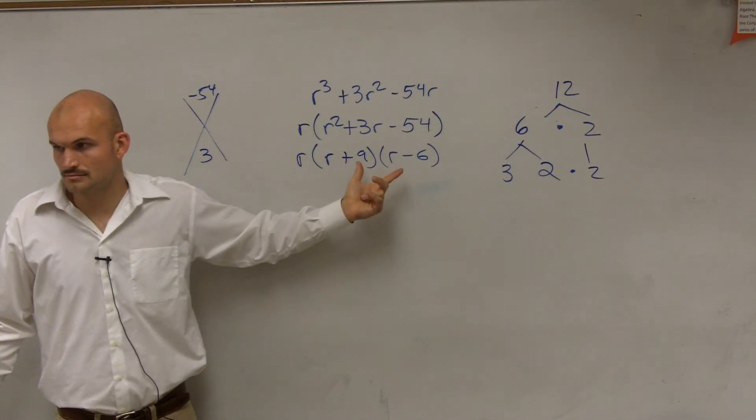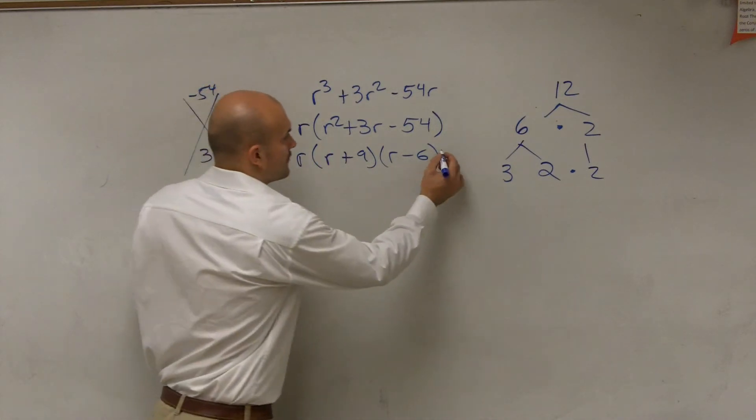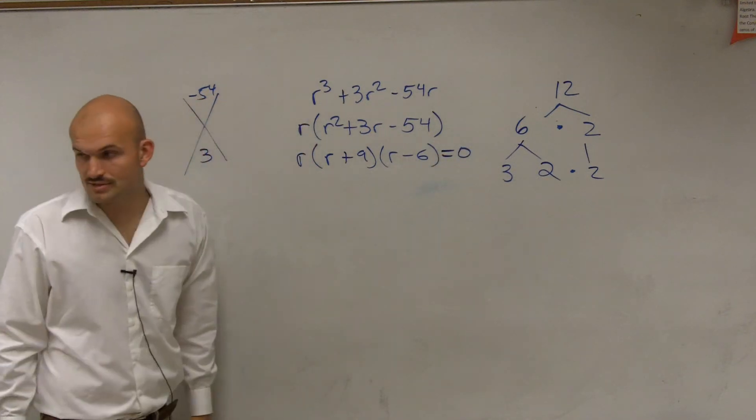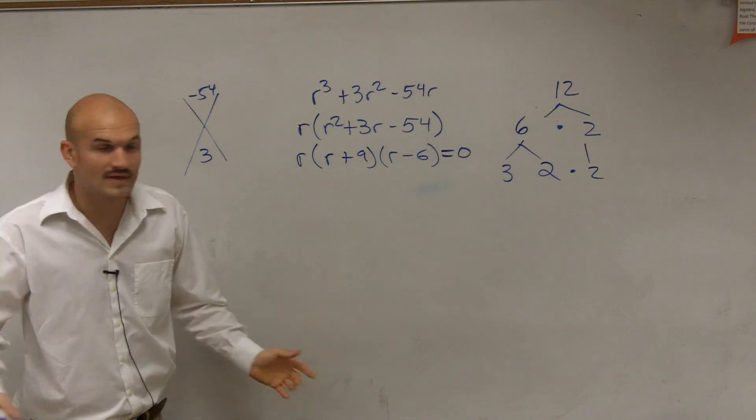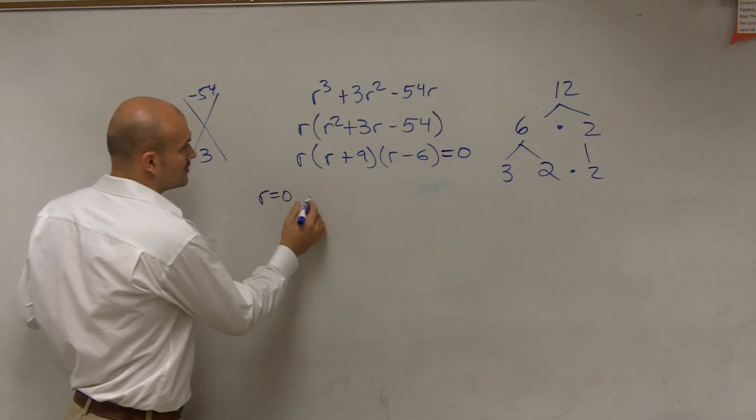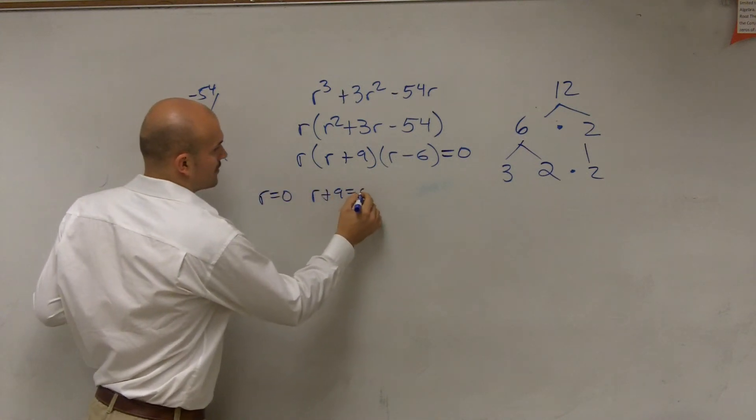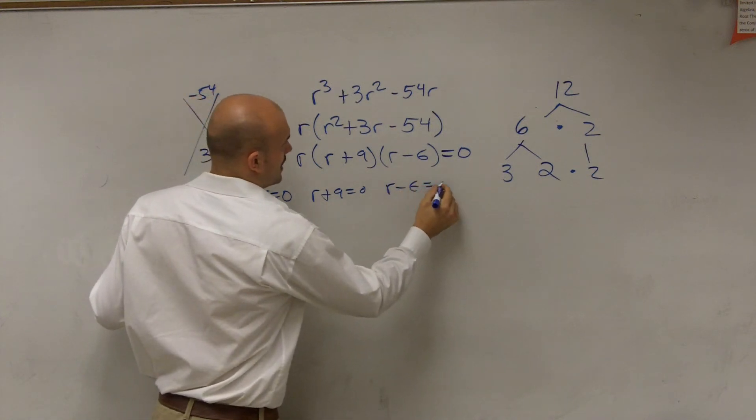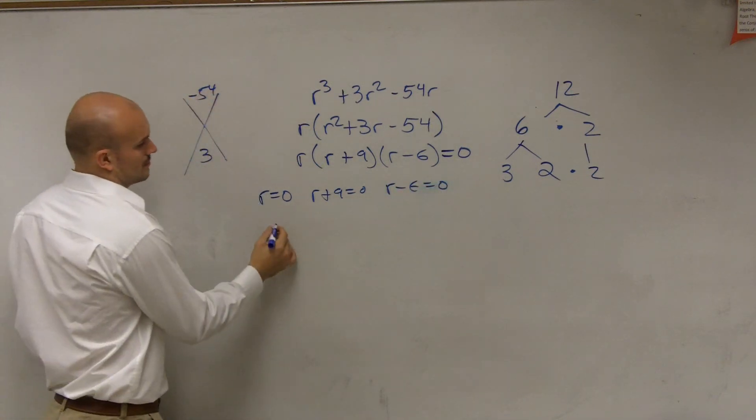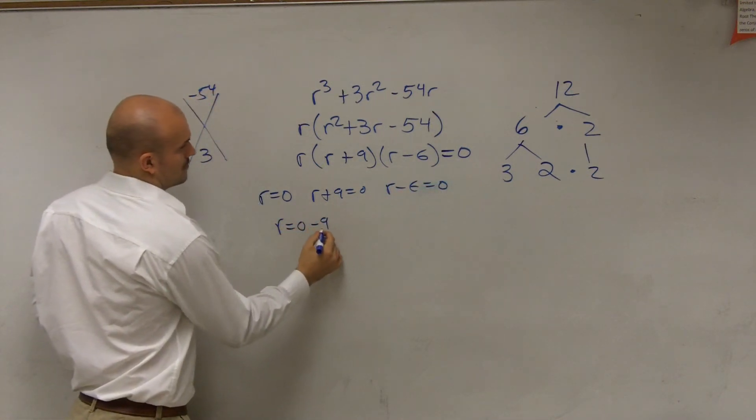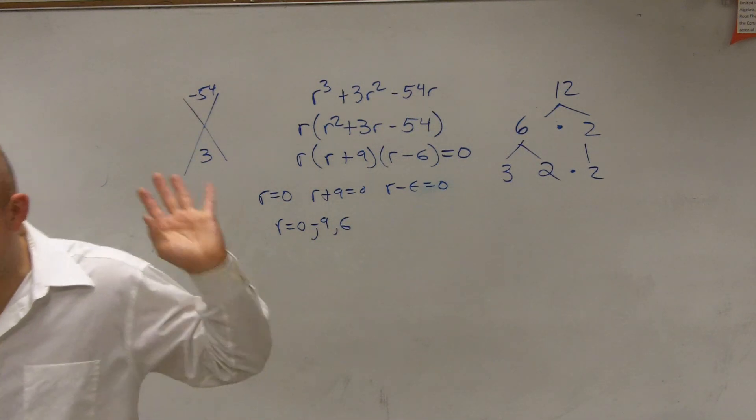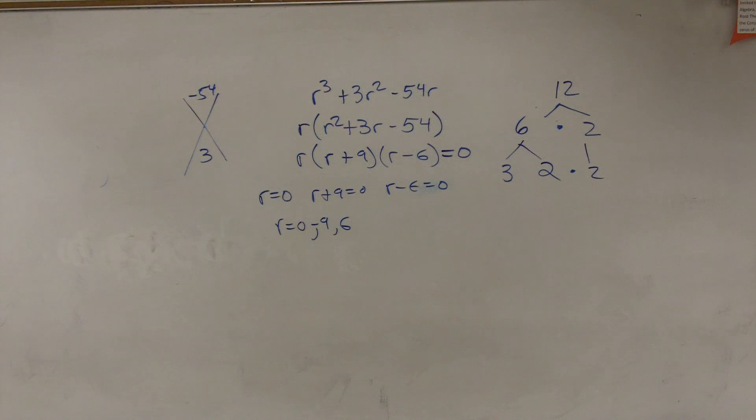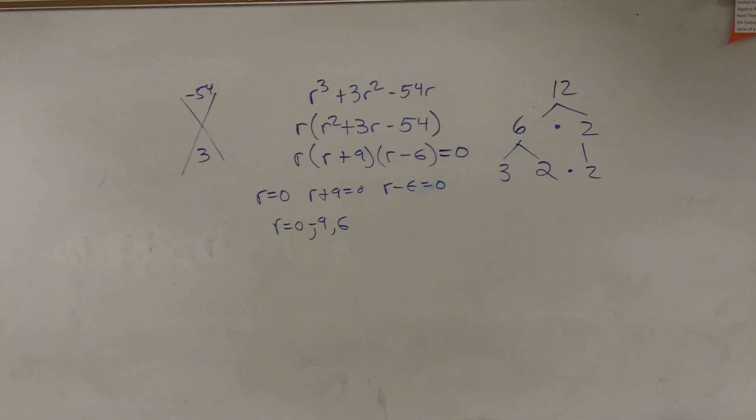What happens if you want it to equal zero? Good question. If that equals 0, now this times this times this equals 0. That means they all set equal to 0. So R equals 0? Yeah. That's a different talk. We'll get into that in the next chapter.